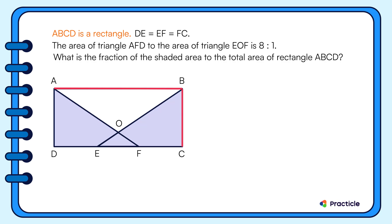ABCD is a rectangle. We are given that DE equals EF equals FC. The area of triangle AFD to the area of triangle EOF is 8 to 1. Do you know what this means? Yes, this means that we can represent the area of EOF by 1 unit and the area of AFD by 8 units.